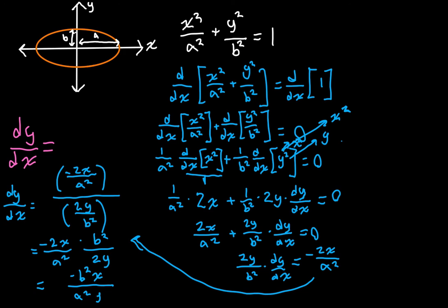That's kind of interesting. If you saw my video on the derivative of a circle, we found a somewhat similar answer — negative x over y — but now you can see how the semi-major and semi-minor axes play into things. If a and b were the same, as in a circle, they'd cancel out and you'd get negative x over y again. In the next video we'll do the same thing for a hyperbola, and I think you'll find the answer is interestingly similar. Thanks for watching.